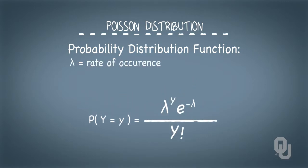Here, lambda is the rate of occurrence, and e is the common Euler's number found in mathematics equal to 2.718. This is the probability of y occurrences in a given interval.